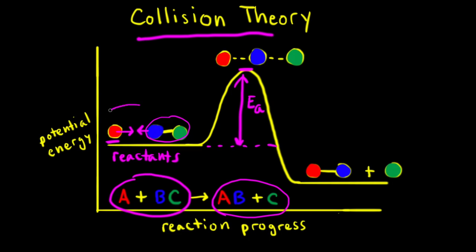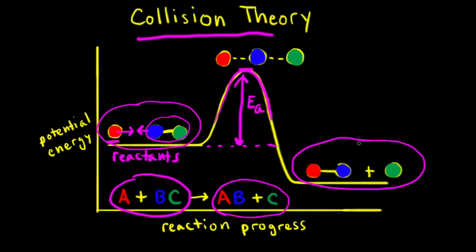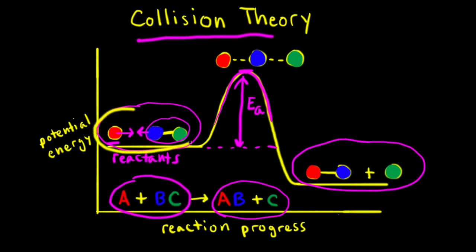If these particles collide with enough energy, we can just get over this activation energy barrier and the reactants can turn into our two products. If the reactant particles don't hit each other with enough energy, they simply bounce off of each other, the reaction never occurs, and we never overcome this activation energy barrier.